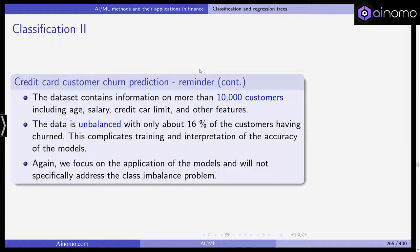You want to classify those observations. The data set includes more than 10,000 observations with features like age, salary, credit card limits and other features. The data is unbalanced with only about 16% of the customers having churned. We've already talked about this class imbalance problem. This led to the fact that in the previous lecture using support vector machines and k-nearest neighbor models, the accuracy wasn't perfect because of the few observations where customers actually terminated the contract.